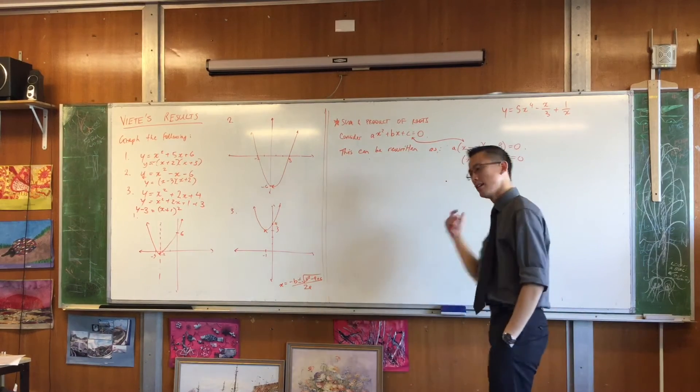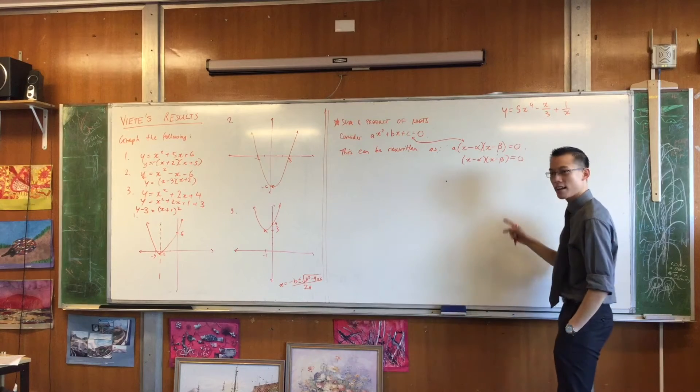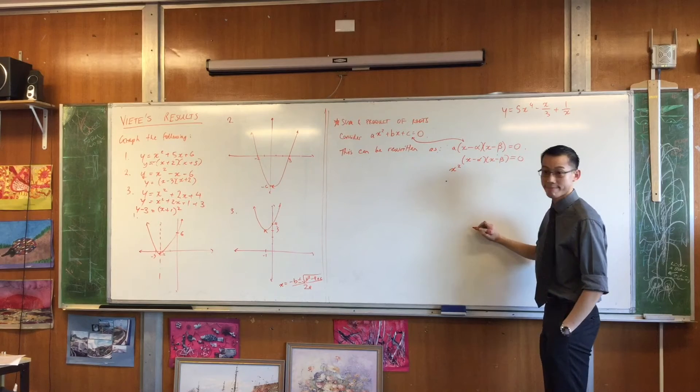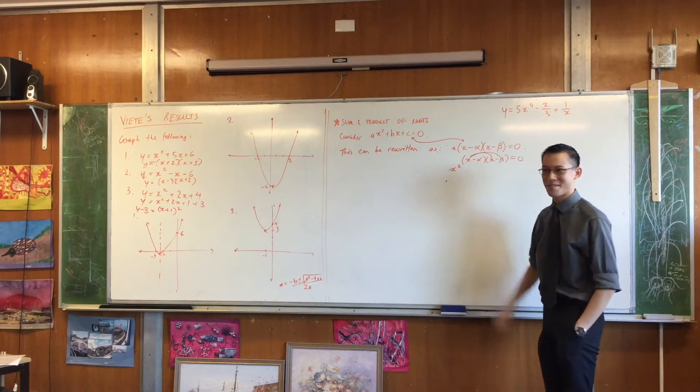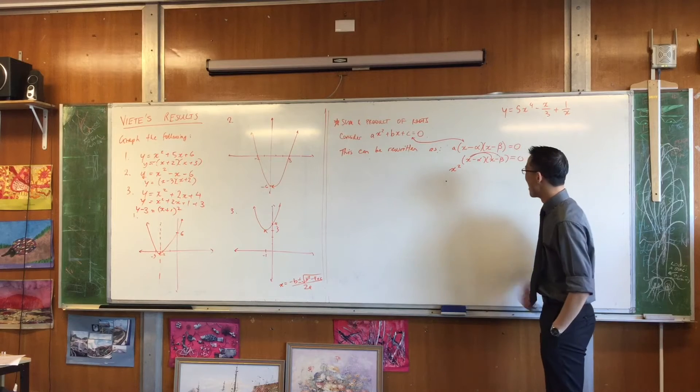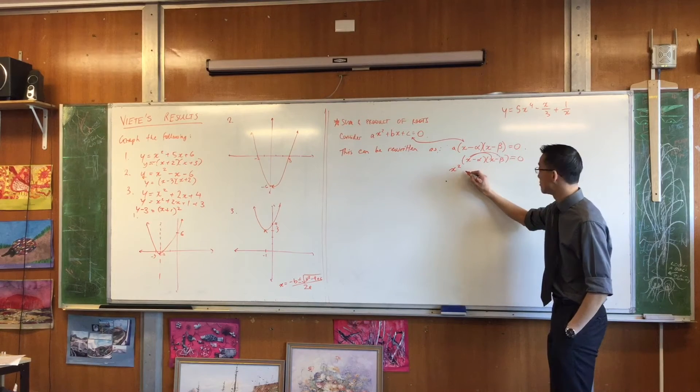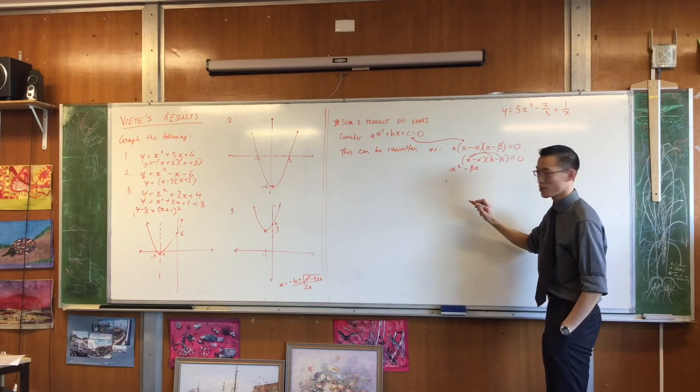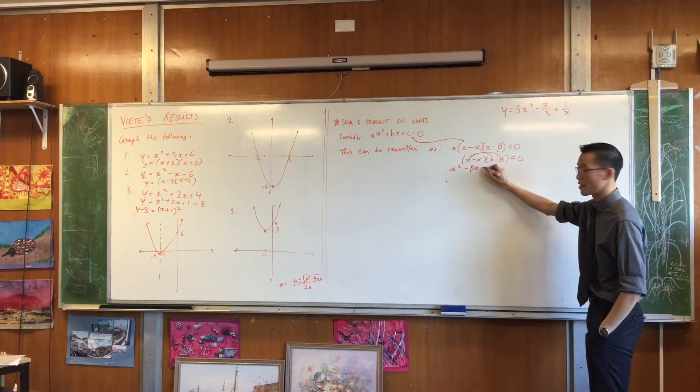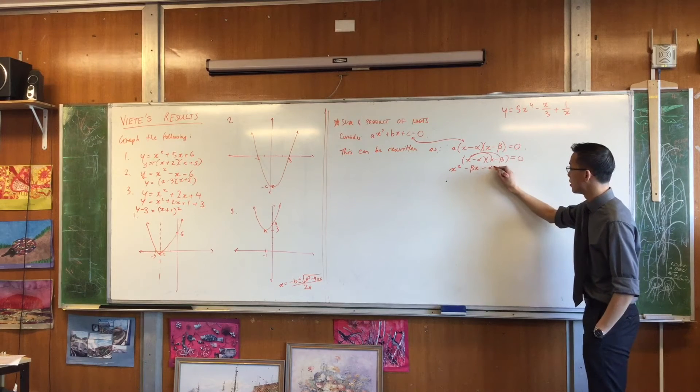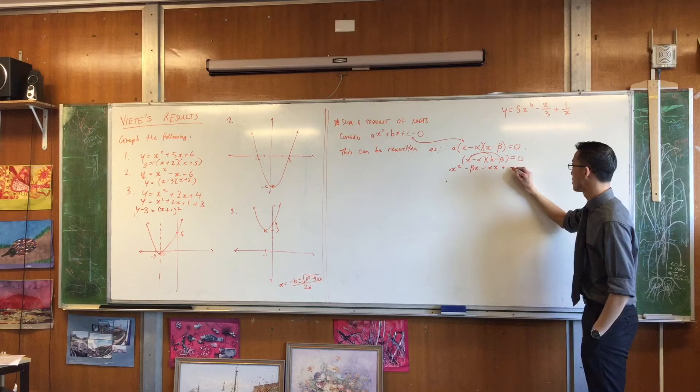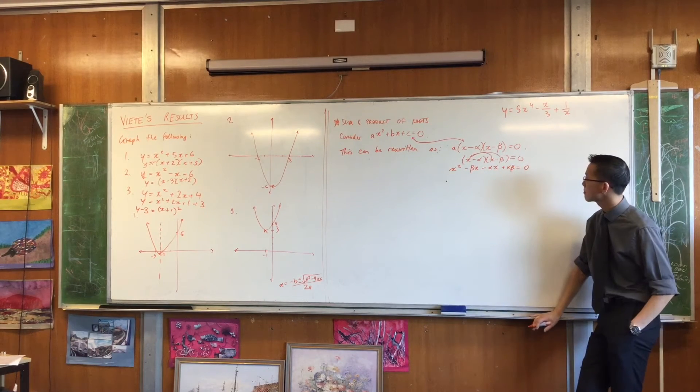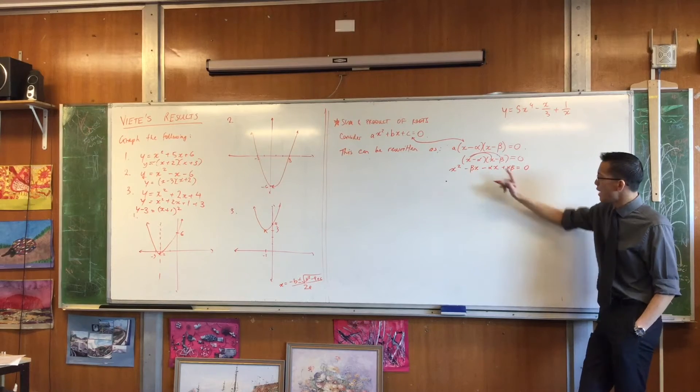Let's expand this now. We spent a lot of time on factorizing last week. Let's expand this. Humor me, it's not hard. Tell me what I get. What's the first term? X squared. You're going to do that thing with your fingers that you were showing me last time? So that means your next term will be minus alpha plus beta, X. Then I have to move on to the next pair. So tell me what's next. Alpha beta. Are you happy with that? Is that okay?